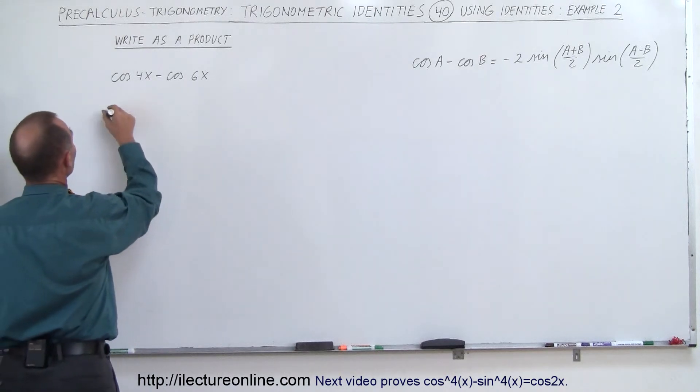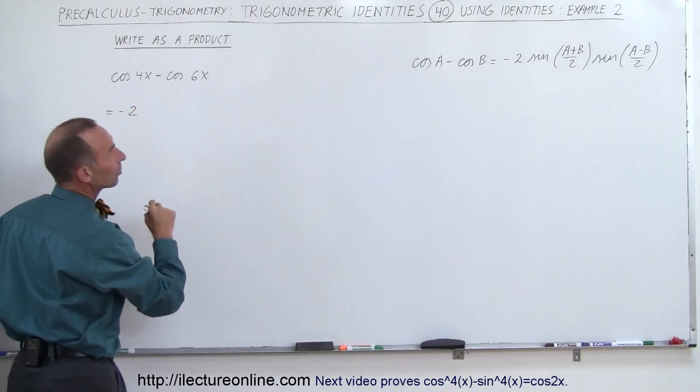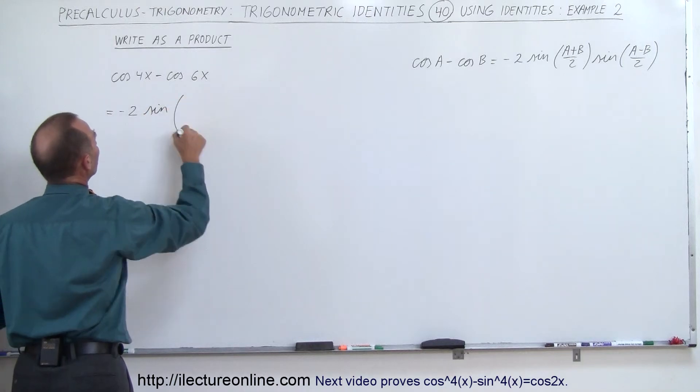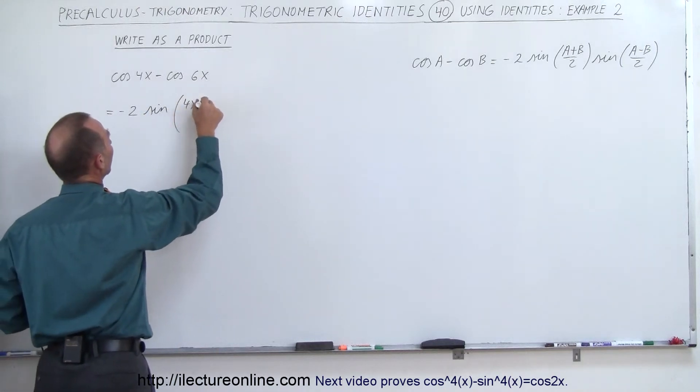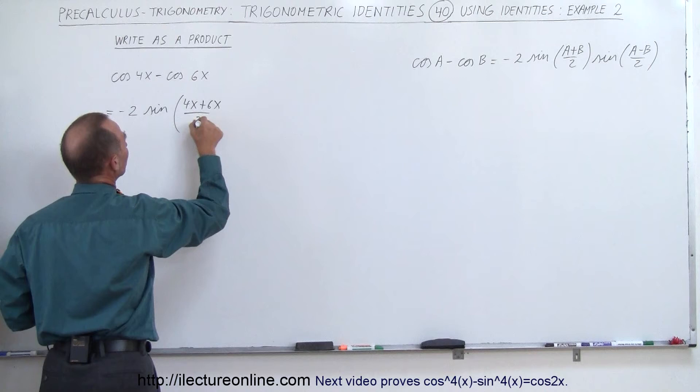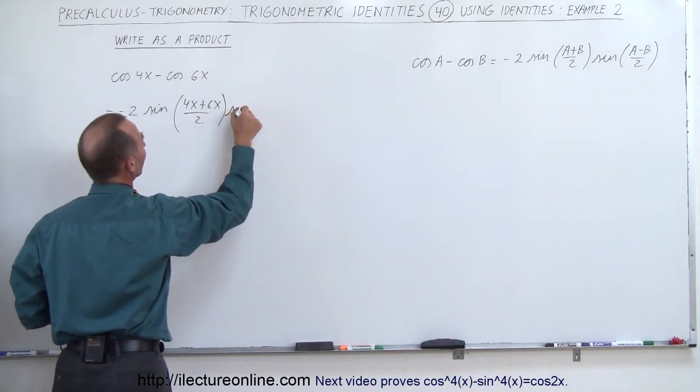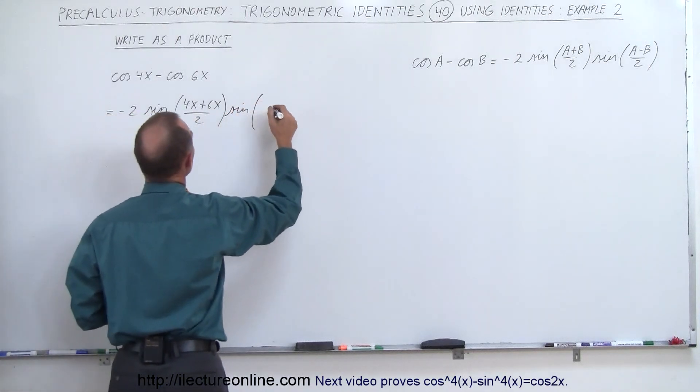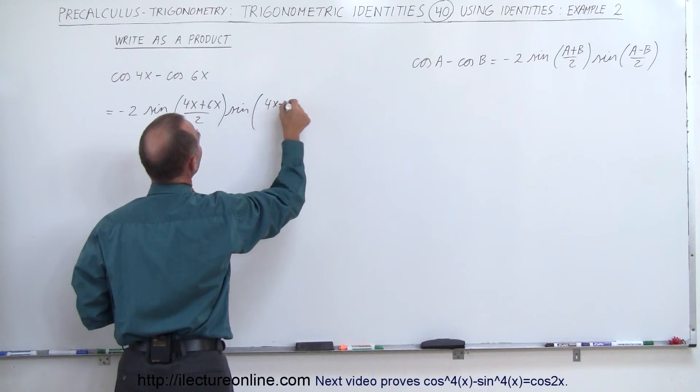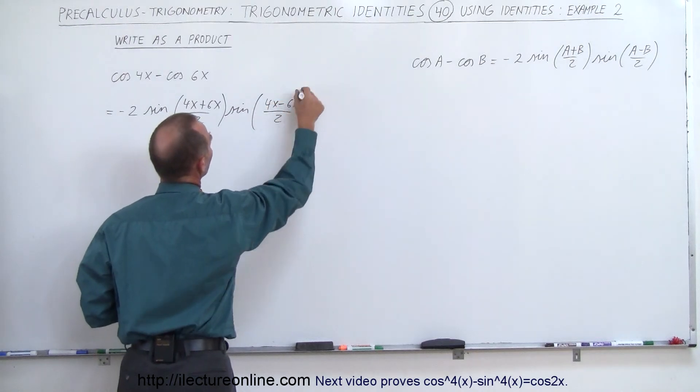So this becomes minus 2 times the sine of the sum of the two angles, which would be 4x plus 6x divided by 2, times the sine of the difference, which would be 4x minus 6x divided by 2.